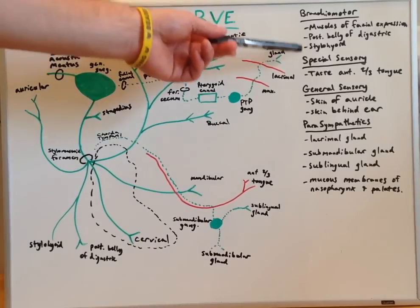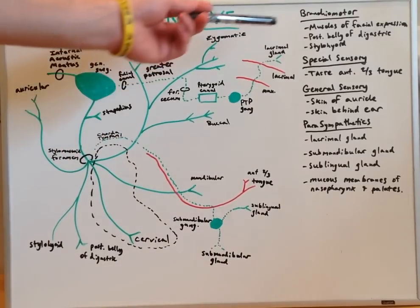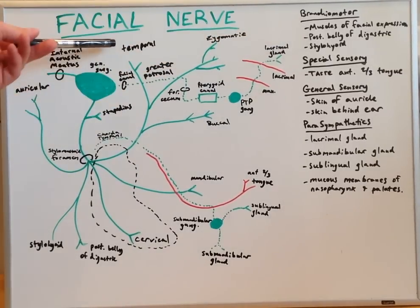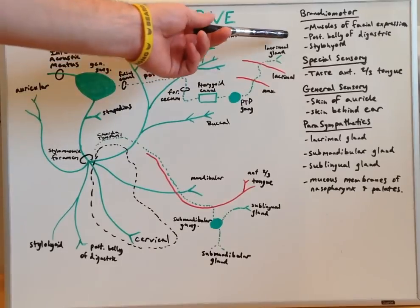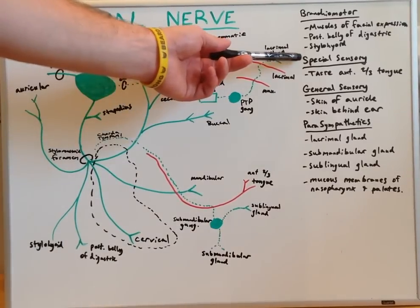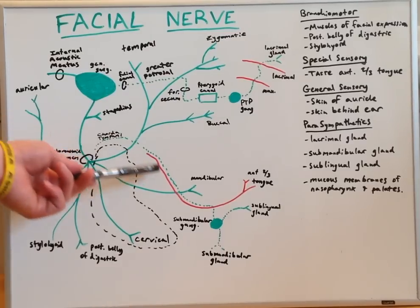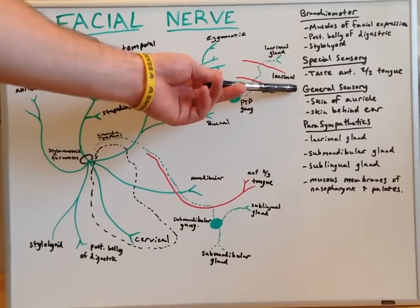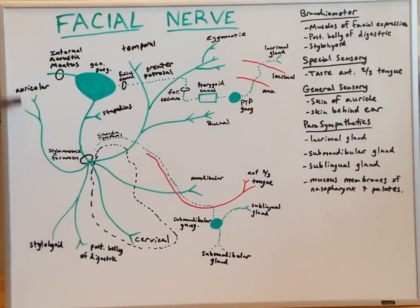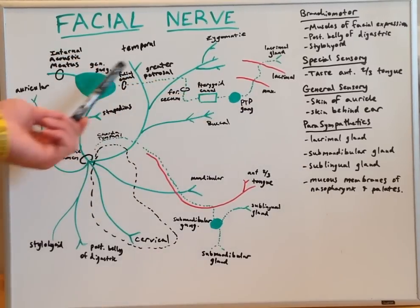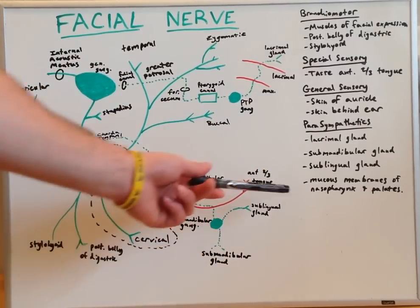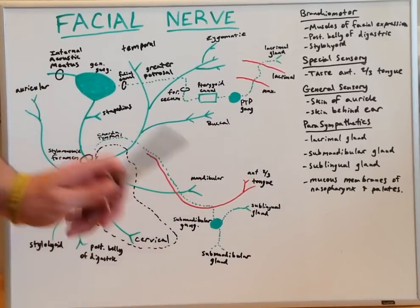Describing all the different functions: the branchial motor fibers innervate the muscles of facial expression via the temporal, zygomatic, buccal, mandibular, and cervical nerves, as well as the posterior belly of the digastric and stylohyoid muscles. Special sensory fibers innervate taste in the anterior two-thirds of the tongue via the chorda tympani. General sensory fibers innervate the skin of the auricle and the skin behind the ear via the auricular branch. Parasympathetic fibers go to the lacrimal gland from the greater petrosal nerve, and to the submandibular and sublingual glands and mucous membranes of the nasopharynx and palate via the chorda tympani.